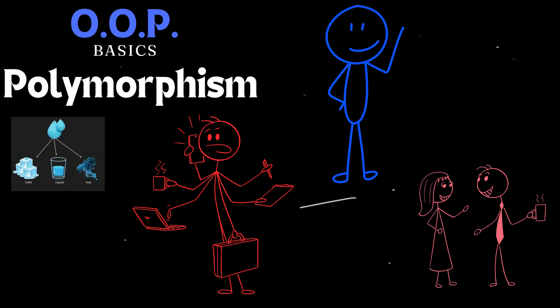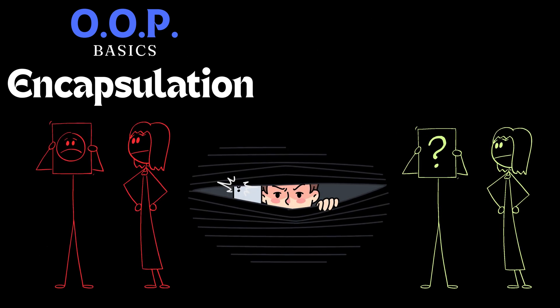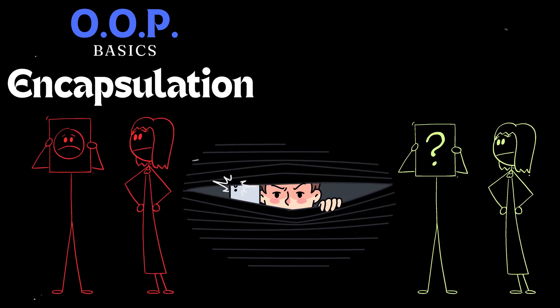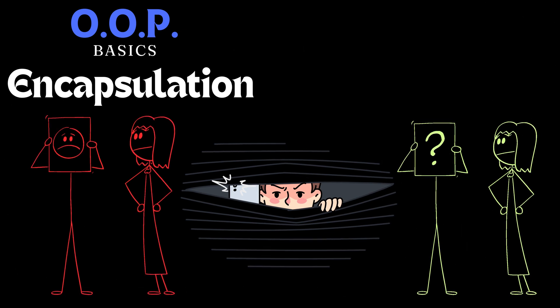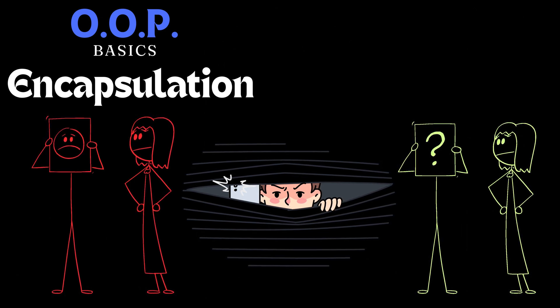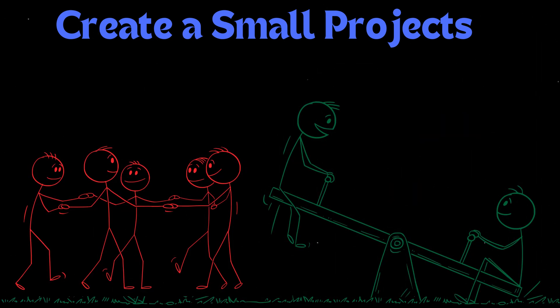Polymorphism enables objects to take on different forms and behave differently based on the context, adding flexibility and adaptability to your programs. Finally, encapsulation hides the inner workings of an object, protecting its internal data and providing controlled access through defined interfaces. The best way to truly understand these OOP concepts is to get your hands dirty and start building. Create small projects that involve classes, objects, inheritance, and polymorphism. Think of it as a coding playground where you can experiment and see these concepts in action.